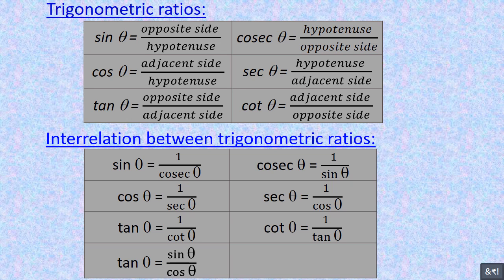Additionally, tan θ = sin θ / cos θ, and cot θ = cos θ / sin θ.